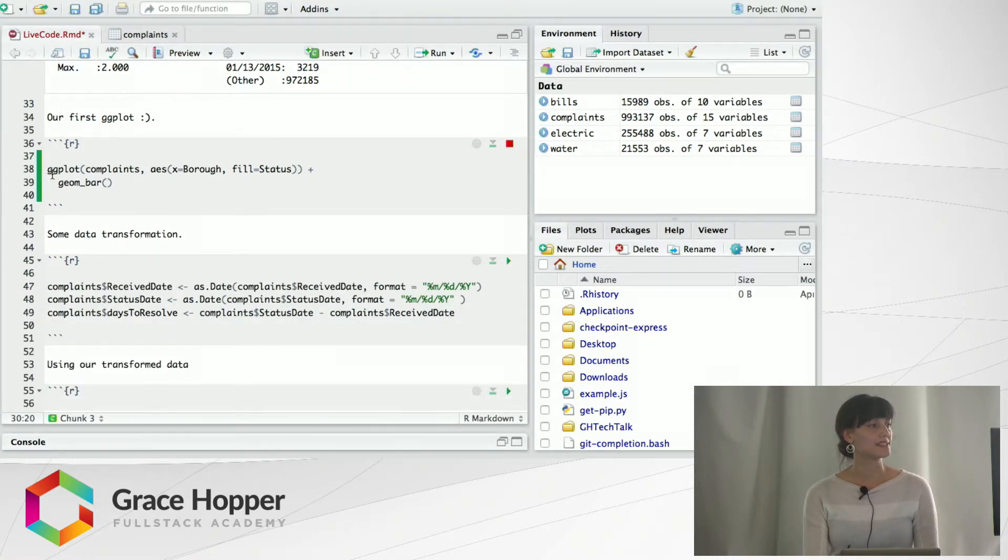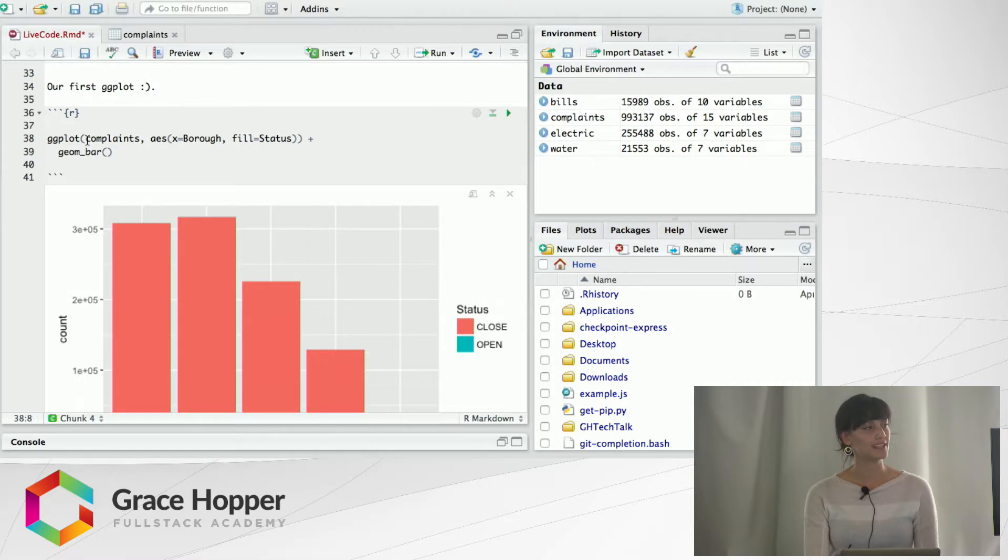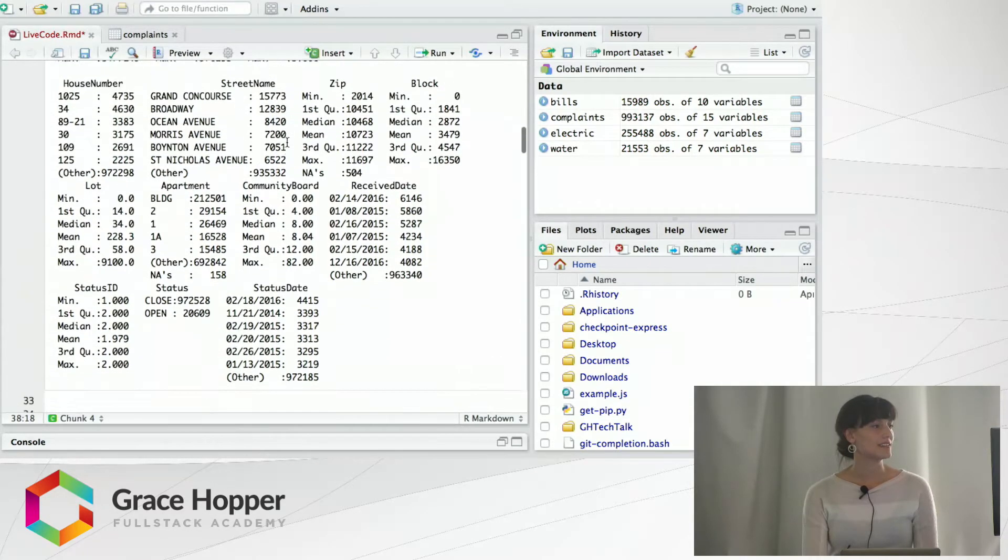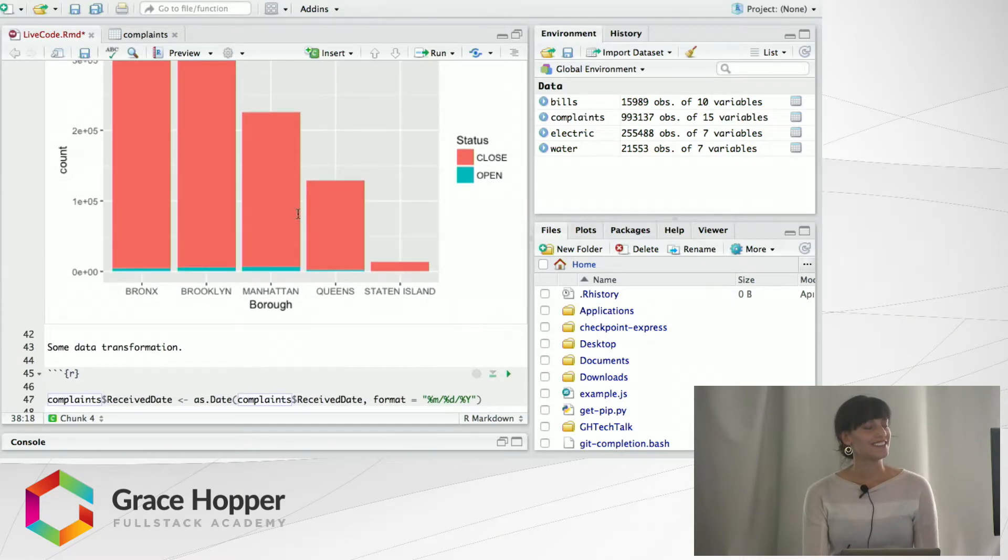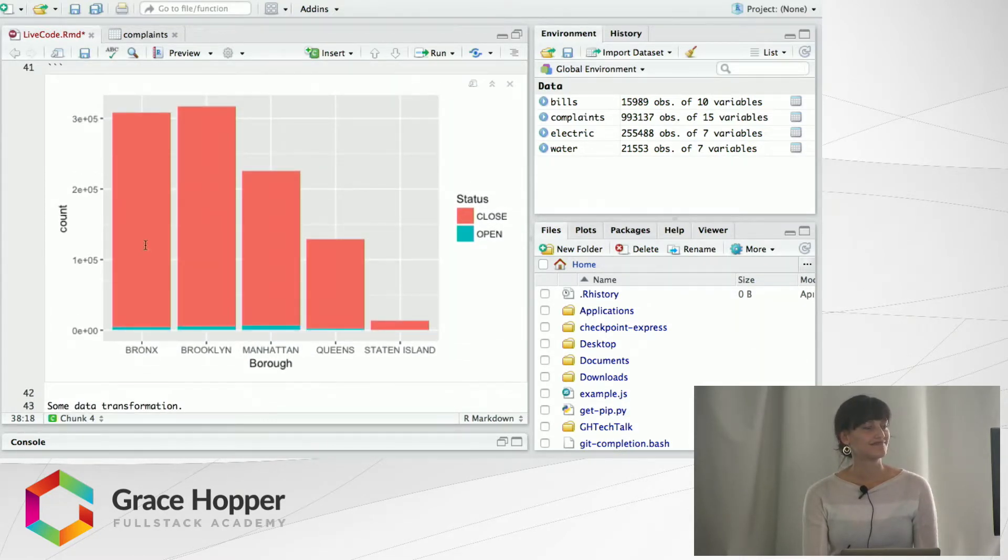So this is some ggplot code. The first argument is just the data frame that I named complaints, and the aesthetic wrapper I'm choosing x to be my borough, and then fill is just how I want to color it. So there is another variable up here called status that was either open or closed. And you can see that as we expected, Brooklyn has the highest followed by Bronx, Manhattan, Queens, Staten Island, and most of these complaints are closed.